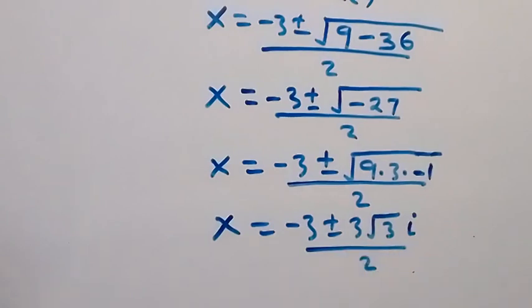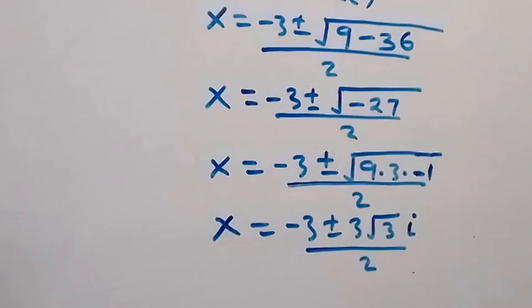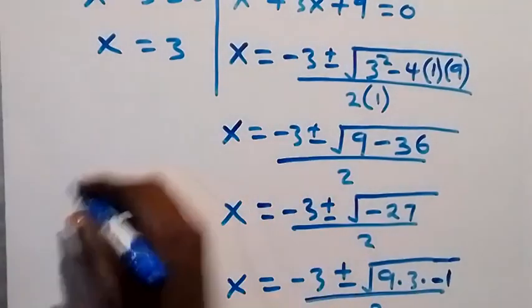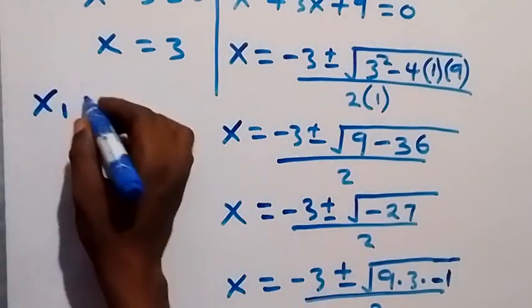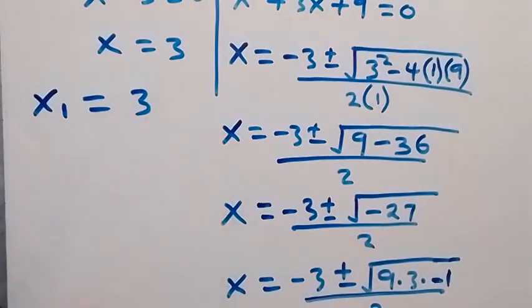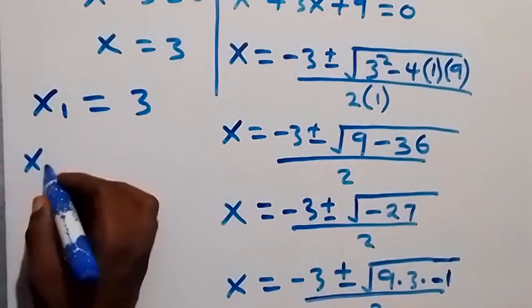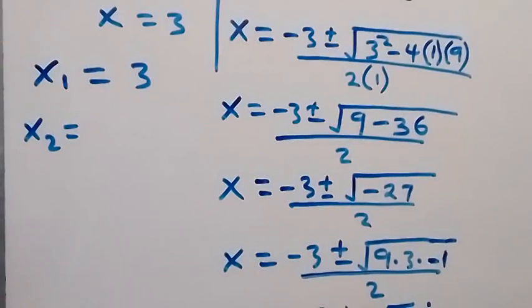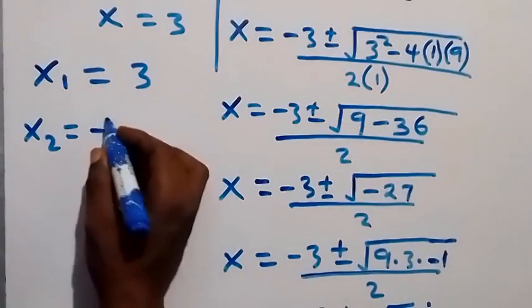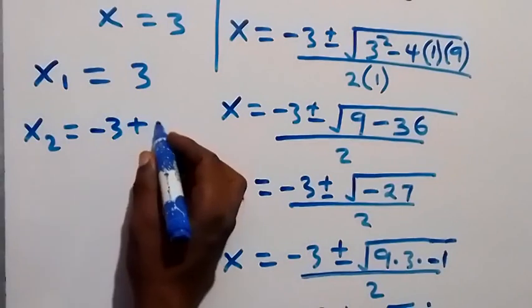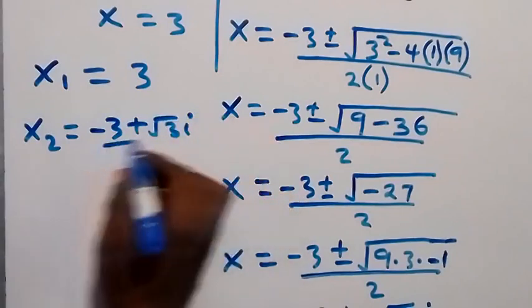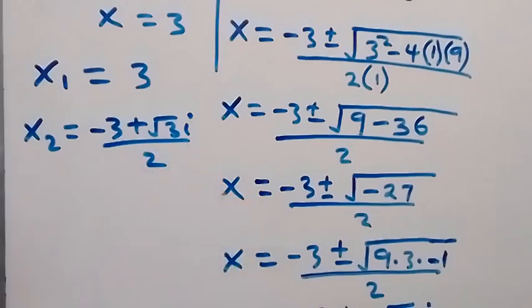The three solutions we have from here will then be: the first one, let's say x₁ from here is equal to 3. Then x₂ from this solution we got, we can get one of the solutions as (-3 + √3i)/2.